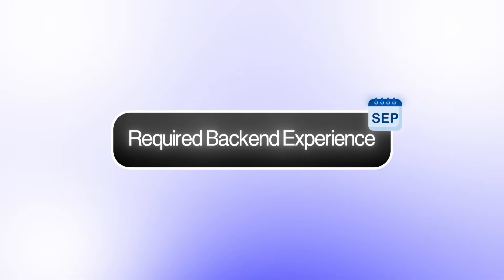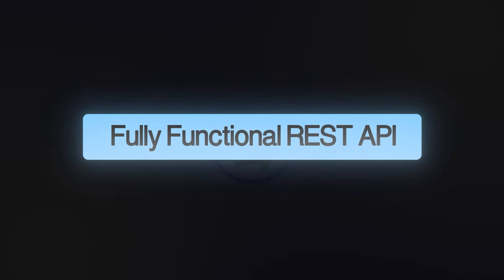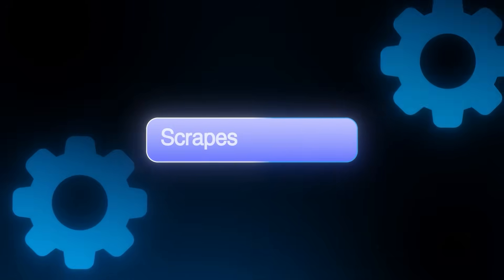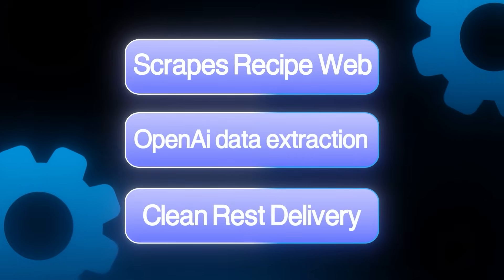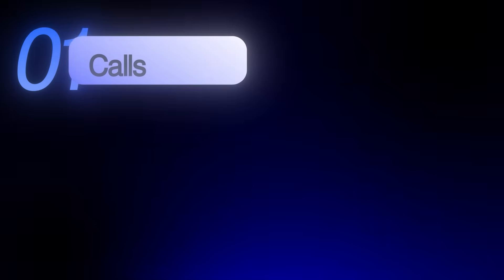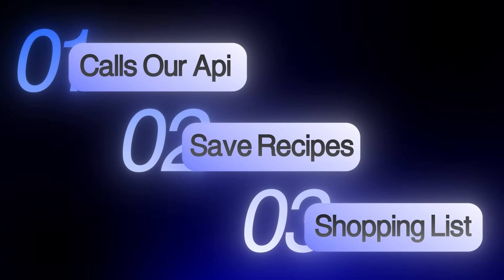Most developers think building APIs requires months of backend experience, but here's what they don't know. With the right AI tools, you can go from zero to a fully functional REST API in under an hour. I'm going to walk you through the exact process I used to create a recipe parser API that scrapes any recipe website, uses OpenAI to intelligently extract structured data, and serves it through clean REST endpoints. We're also building a complete meal planning application that calls our API, saves recipes to weekly meal plans, and generates organized shopping lists by ingredient category.